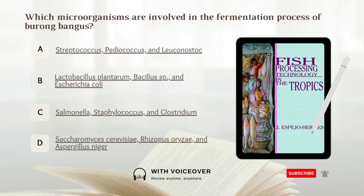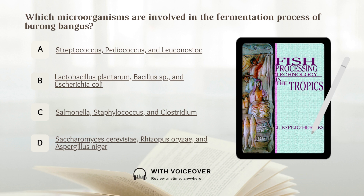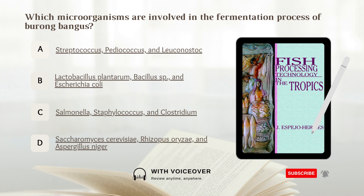Which microorganisms are involved in the fermentation process of burong bangus? A) Streptococcus, Pediococcus, and Leuconostoc. B) Lactobacillus plantarum, Bacillus species, and Escherichia coli. C) Salmonella, Staphylococcus, and Clostridium. D) Saccharomyces cerevisiae, Rhizopus oryzae, and Aspergillus niger.